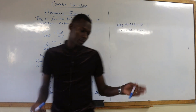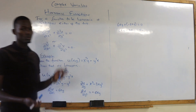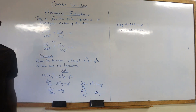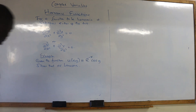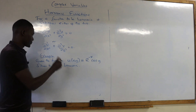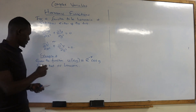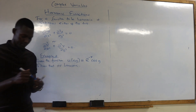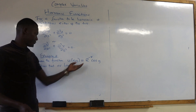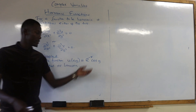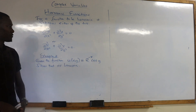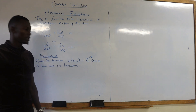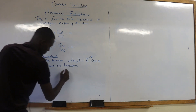So therefore, 6xy plus negative 6xy equals zero. Indeed, this particular function is harmonic. Let's check a second example. We have been given the function u(x,y) given by an exponential and cosine function. You show that the function is harmonic — same process.